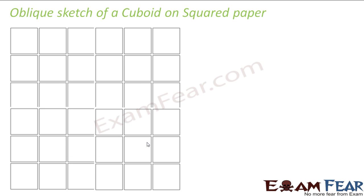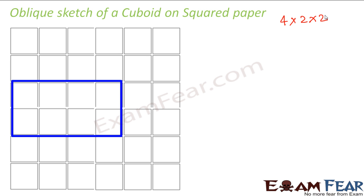Now let us also try doing an oblique sketch for a cuboid. In a cuboid, all the sides would not be equal. Let's say we want to draw a cuboid of dimension 4 by 2 by 2, meaning the length, breadth and height would be 4 cm, 2 cm, and 2 cm respectively. In this case, we do not draw a square — instead we draw a rectangle of dimension 4 by 2. The length covers 4 squares and the breadth covers 2 squares. This is the front face. We then draw the back face slightly displaced, with the same dimension 4 by 2.